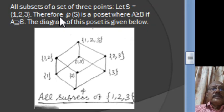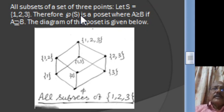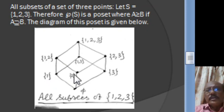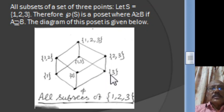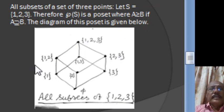Now we consider the set of all subsets of a set with 3 elements. If S = {1, 2, 3} and P(S) is the power set, we define A ≥ B if A contains B. This is a partially ordered set, and the Hasse diagram shows: singletons {1}, {2}, {3} are covers for the empty set; {1,2} is a cover for {1} and {2}; {2,3} is a cover for {2} and {3}; and {1,2,3} is a cover for {1,2}, {1,3}, and {2,3}.